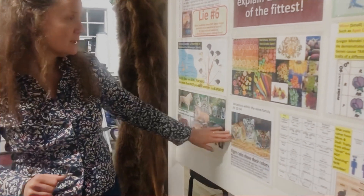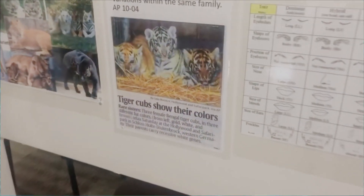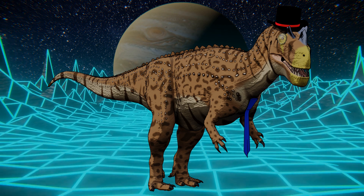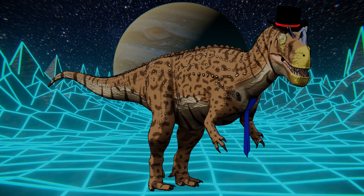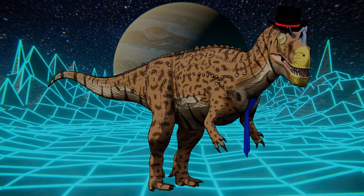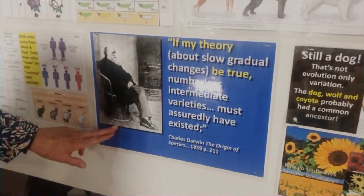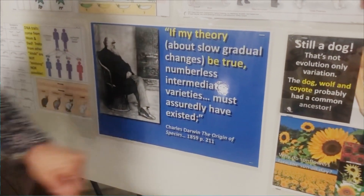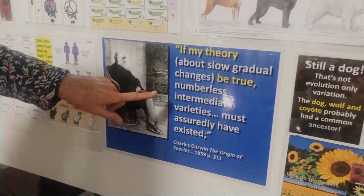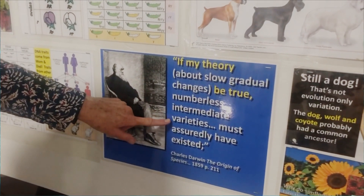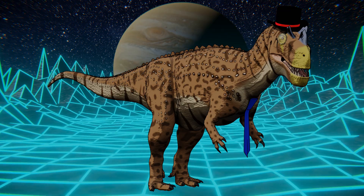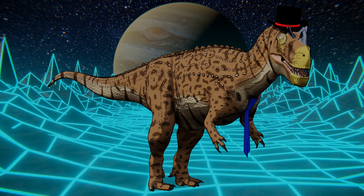Some variation has nothing to do with environment or survival — it's just color variation. But coloration does play a role in survivability: wild white tigers don't survive long, polar bears are all white, and coyotes match the color of the desert. Darwin himself acknowledged in Origin of Species, page 211: 'If my theory be true, then numberless intermediate varieties must assuredly have existed.' He was right, and fortunately we do have transitional forms, as we've previously discussed.